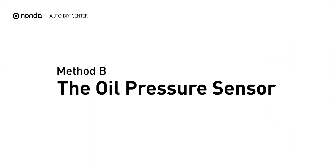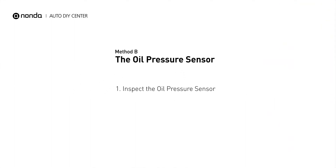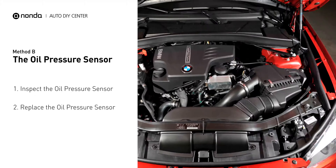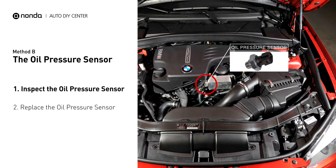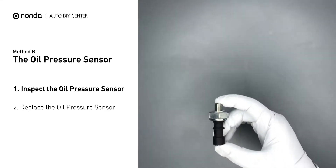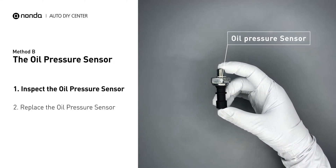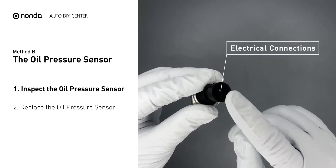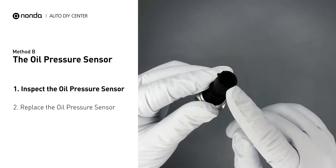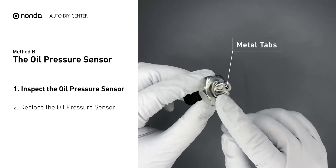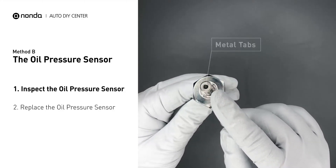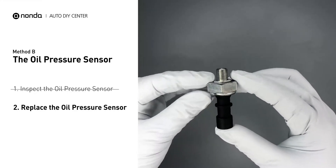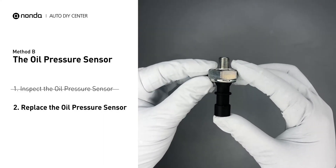Method B: The oil pressure sensor. The oil pressure sensor is most often mounted in the engine block or the cylinder heads. Carefully remove the oil pressure sensor from your vehicle. Visually check the oil pressure sensor's electrical connections and metal tabs for any damage. If damage is found, replace the oil pressure sensor.